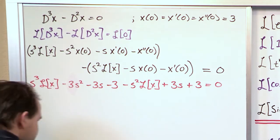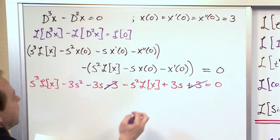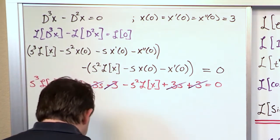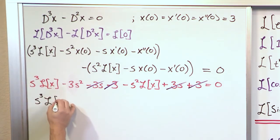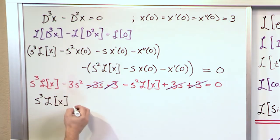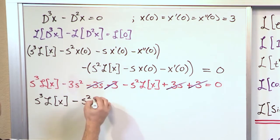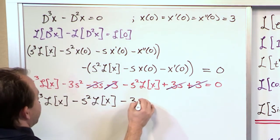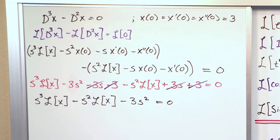Things simplify quite a bit. Rewriting everything: S³ Laplace of X minus S² Laplace of X minus 3S² equals 0. We have a common Laplace Transform factor in the first two terms, so we factor it out. Inside we'll have S³ minus S², and on the right-hand side we move the 3S² term over, making it positive 3S².